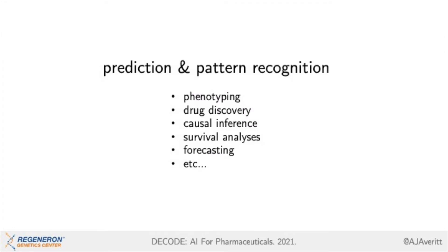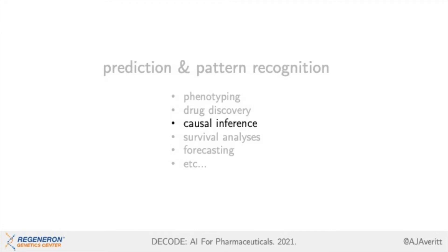To me, the most interesting tasks in machine learning are prediction and pattern recognition. These tasks can have a lot of different aims and purposes, particularly within pharmaceuticals and broader health research. They include things like phenotyping, drug discovery, causal inference, survival analysis, and forecasting. I'm going to be framing my talk today from the lens of causal inference, or the study of the relationship between cause and effect. It's my area of expertise, and the principles I will be discussing today can be applicable to many tasks and many questions.